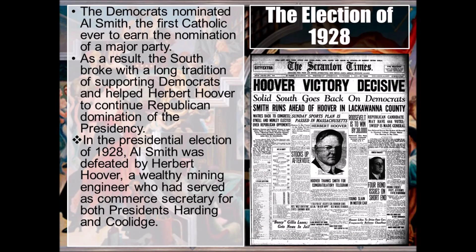The leading candidates for the 1928 Republican nomination were Herbert Hoover, Secretary of Commerce; Frank Orren Lowden, former governor of Illinois; and Senate Majority Leader Charles Curtis of Kansas. Many Republicans tried to draft Coolidge, but he turned it down. Hoover got the nomination with Curtis as his running mate. The Democratic Party nominated Al Smith, governor of New York — the first Roman Catholic to be a major party's presidential candidate — with Senator Joseph Taylor Robinson of Arkansas as his running mate.